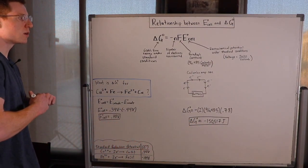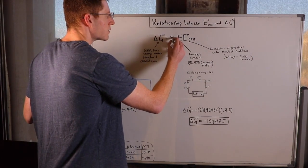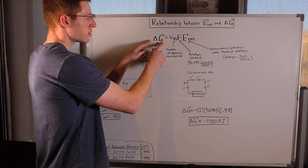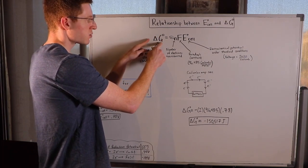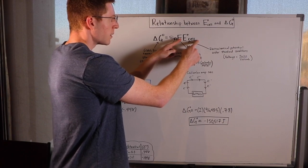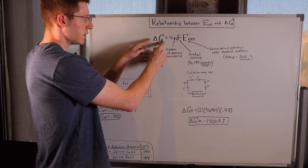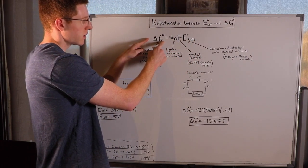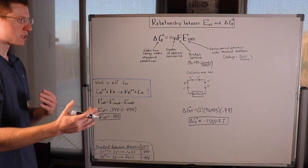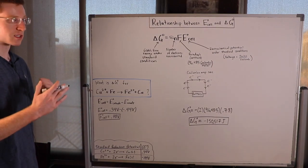And I hope it makes sense to you that this negative sign here means that whenever you have a negative delta G, or a spontaneous reaction, you're going to have a positive E-cell. And whenever you have a positive delta G, or a non-spontaneous reaction, you're going to have a negative E-cell. So they're sort of the reverse of each other for spontaneous and non-spontaneous reactions.